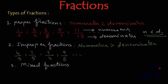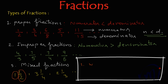Then there is one more kind of fraction called mixed fractions. Mixed fractions are fractions like 1 and 1/2, or 3 and 1/4, or 2 and 1/3. These are called mixed fractions because they are made up of two parts: a whole number and a proper fraction.